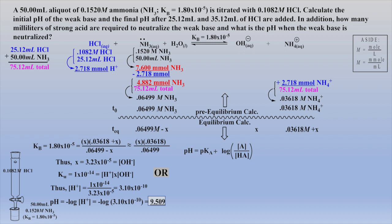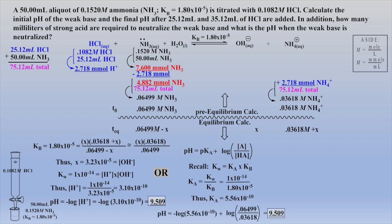Alternatively, one could use the Henderson-Hasselbalch equation to solve for the final pH. But first, the Kb must be converted to a Ka as shown. With Ka in hand and concentrations of weak base and conjugate acid previously calculated, the Henderson-Hasselbalch equation gives the same resulting pH of 9.509 in a much easier manner.